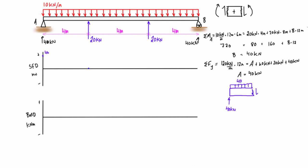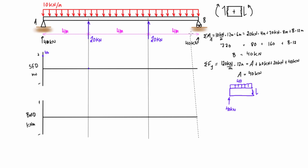We want to draw on our marker lines to help line up the points of interest and keep the bending moment diagram and shear force diagram aligned with each other. This first section is going to be a straight line — we draw it thick, going down from 40 to zero, and we can label that zero.